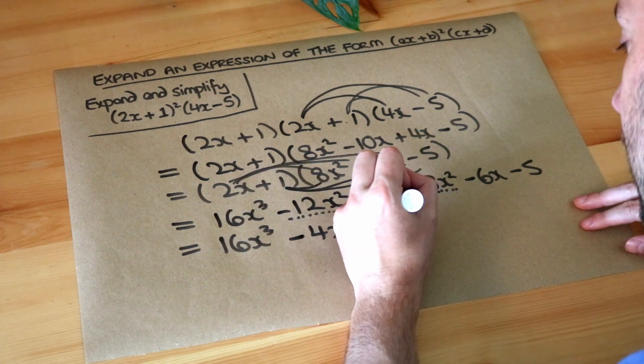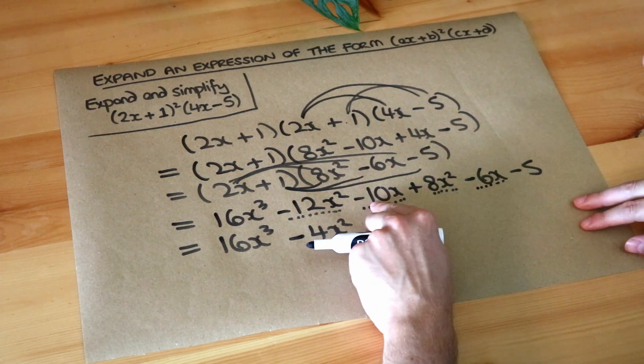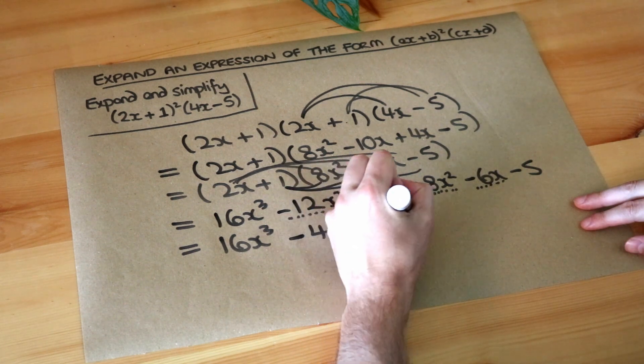We've got two different x terms. So minus 10x minus 6x. Well minus 10 subtract 6 is minus 16 lots of x.